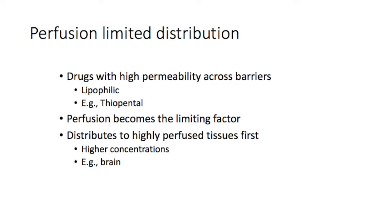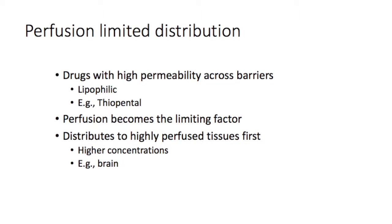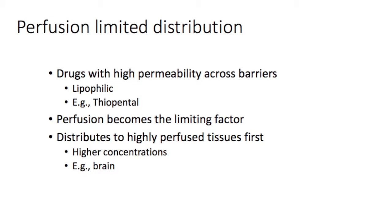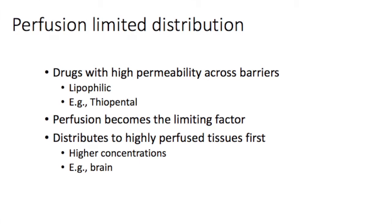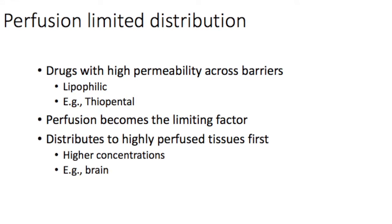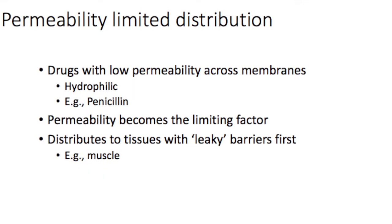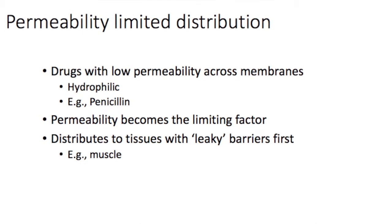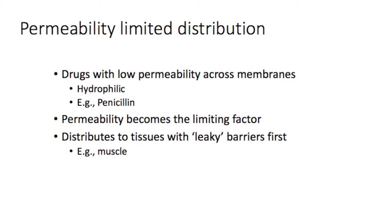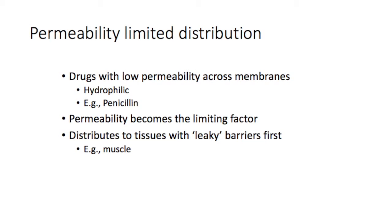Drugs with perfusion-limited distribution tend to cross barriers — including tight barriers — relatively easily because they are typically lipophilic, with thiopental as a good example. For these drugs, diffusion into a tissue is limited only by how fast the blood can deliver high concentrations to that tissue — in other words, perfusion. As a result, these drugs rapidly achieve high concentrations in highly perfused tissues like the brain. In contrast, drugs with permeability-limited distribution tend to be hydrophilic and unable to cross tight barriers easily. The limiting factor becomes the tightness of the diffusion barrier, and these drugs tend to achieve higher concentrations in tissues with leaky barriers like muscle, compared to tissues protected by tight barriers like the brain.